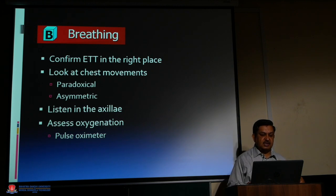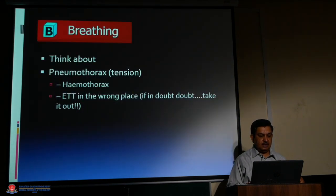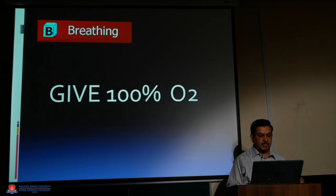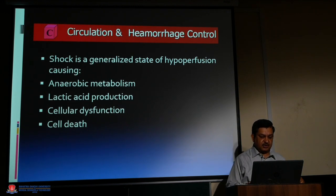For breathing: confirm the ETT is in the right place. Look for chest movements — paradoxical or asymmetric. Listen in the axilla. Assess oxygenation with pulse oximetry. Think about pneumothorax, tension hemothorax, or ETT in the wrong place. Give 100 percent oxygen. Circulation: shock is a generalized state of hypoperfusion causing anaerobic metabolism, lactic acid production, cellular dysfunction, and cell death.